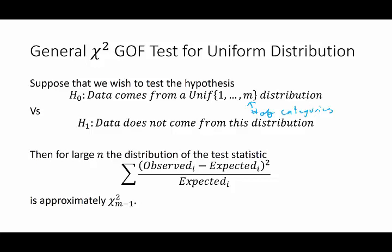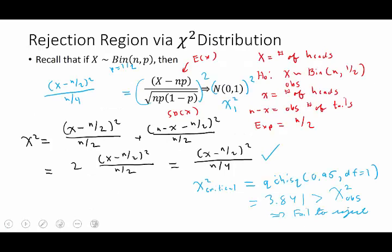Then what Pearson's result states is that for large n the distribution of the test statistic (observed minus expected) over expected is approximately chi-squared with m minus one degrees of freedom. Now why the m minus one you might ask? Well if you recall on the previous slide, that was a situation where m was two and you'll notice that the last term in our chi-squared statistic we were able to simplify it in terms of the first,